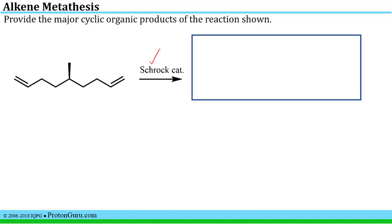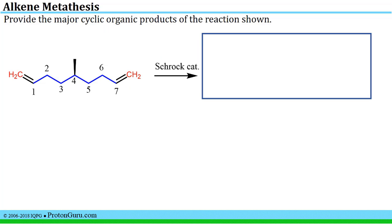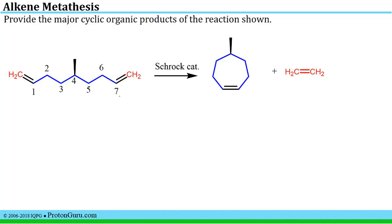When you see the Schrock catalyst — the other very famous named catalyst in metathesis chemistry — you would think about doing a metathesis reaction, and this question is asking you specifically to make a cyclic organic product. You would first want to identify where the CH2 groups are on the CC double bonds that are going to be metathesized, and think: if those are going to come off as ethylene and the rest are going to wrap around and form a cycle, then I have this seven-carbon chain. When those are metathesized to form the cyclic product, I should get a seven-membered ring in addition to the ethylene gas.